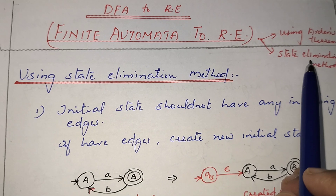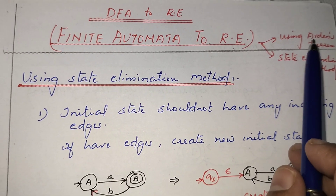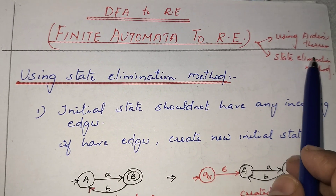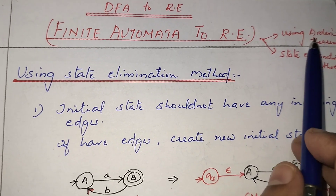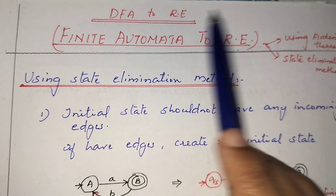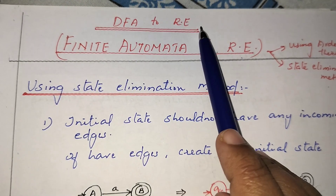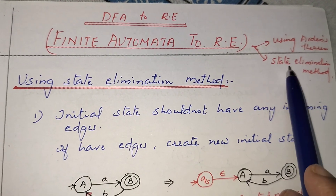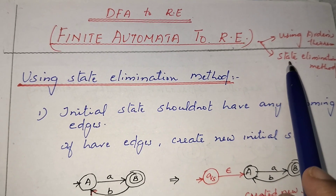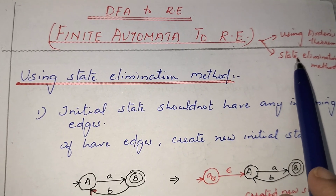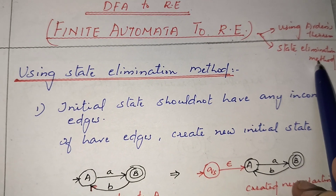For university examinations, they may ask you to prove or convert using Arden's theorem specifically. If the question asks for Arden's theorem, you must use it. Otherwise, you can use any method. In this video, I am going to explain how to convert finite automata to a regular expression using the state elimination method.